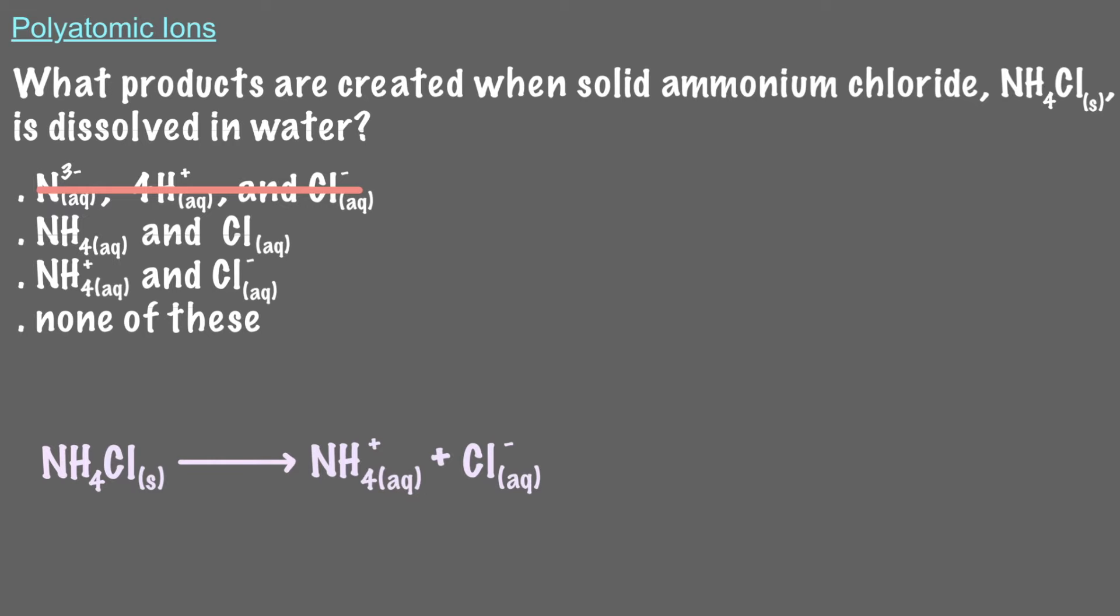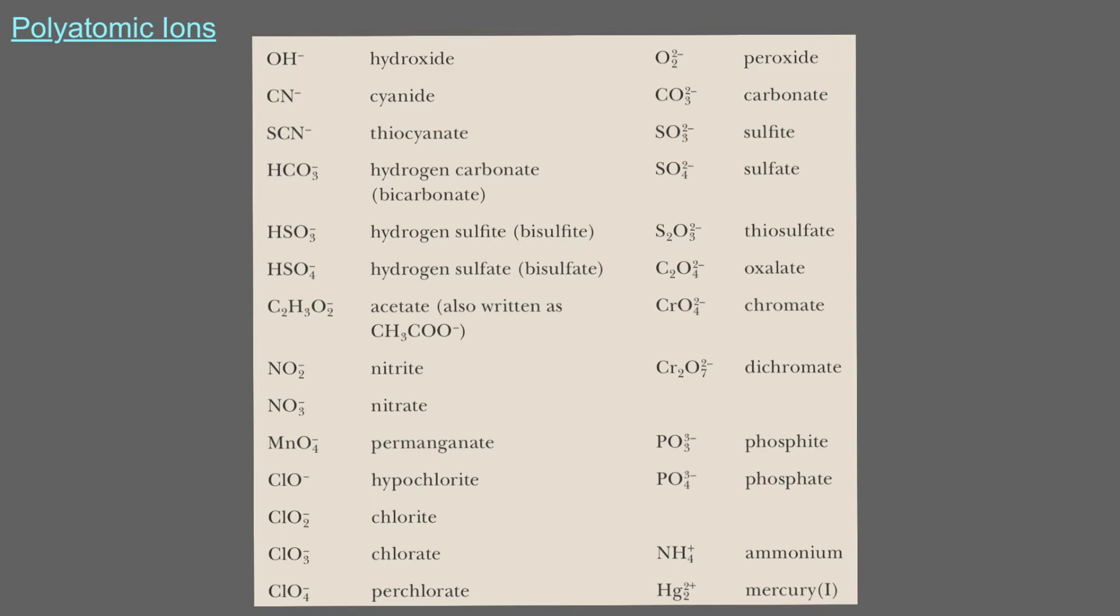So, ammonium chloride dissociates into aqueous ammonium and aqueous chloride. Here's a table with some of the most common polyatomic ions. It's important to be familiar with each of them as they come up a lot.